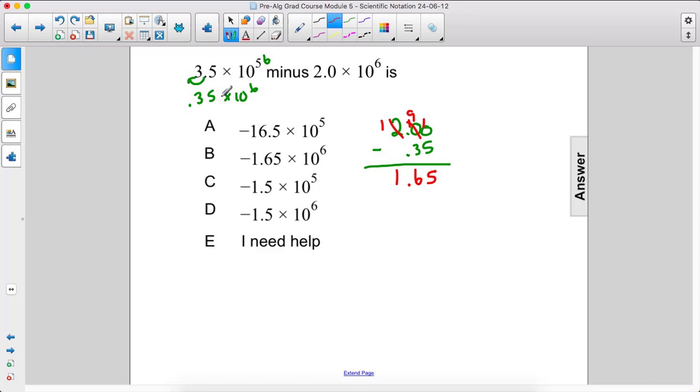So the difference between these two numbers is 1.65. But because the smaller number is subtracting the larger one, we're going to go ahead and just make that negative. So it's negative 1.65 times 10 to the 6th, and that is B.